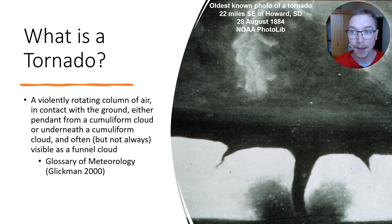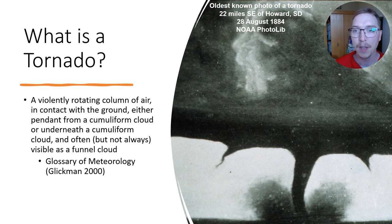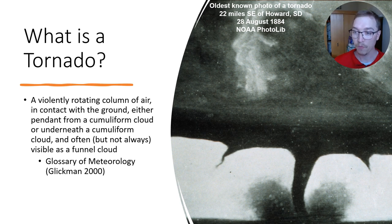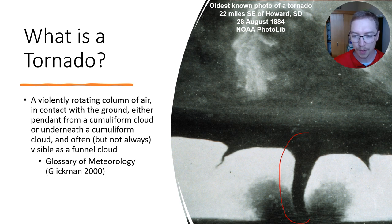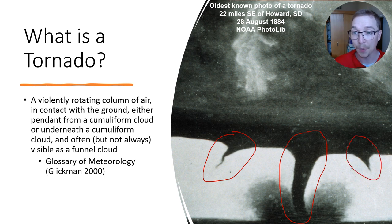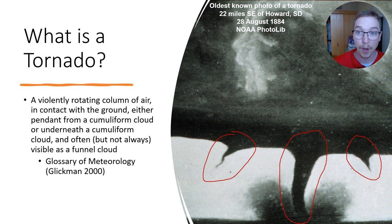What we're looking at here is really cool. This is the oldest known photo of a tornado, seen about 22 miles southeast of the town of Howard, South Dakota on the 28th of August 1884. You can see this really large funnel kicking up tons of debris and dust, and we also notice maybe a couple others starting to generate. The fact that they were able to capture it in 1884 is pretty incredible.